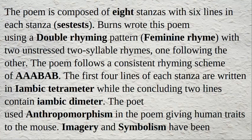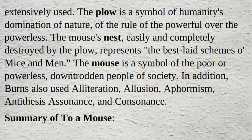The first four lines of each stanza are written in iambic tetrameter, while the concluding two lines contain iambic dimeter. The poet used anthropomorphism in the poem, giving human traits to the mouse. Imagery and symbolism have been used: the plough is a symbol of humanity's domination of nature, of the rule of the powerful over the powerless. The mouse's nest, easily and completely destroyed by the plough, represents the best-laid schemes of mice and men. The mouse is a symbol of the poor or powerless, downtrodden people of society. In addition, Burns also used alliteration, allusion, aphorism, antithesis, assonance, and consonance.